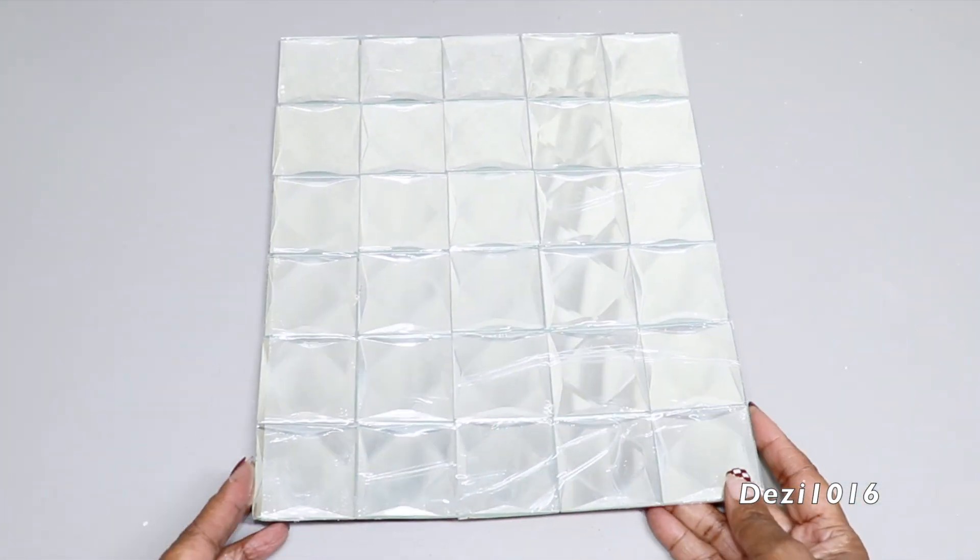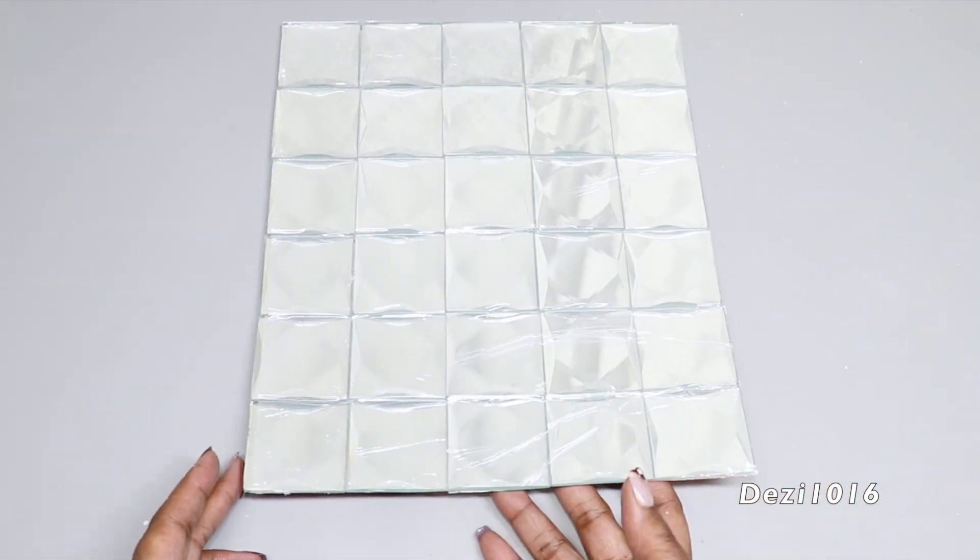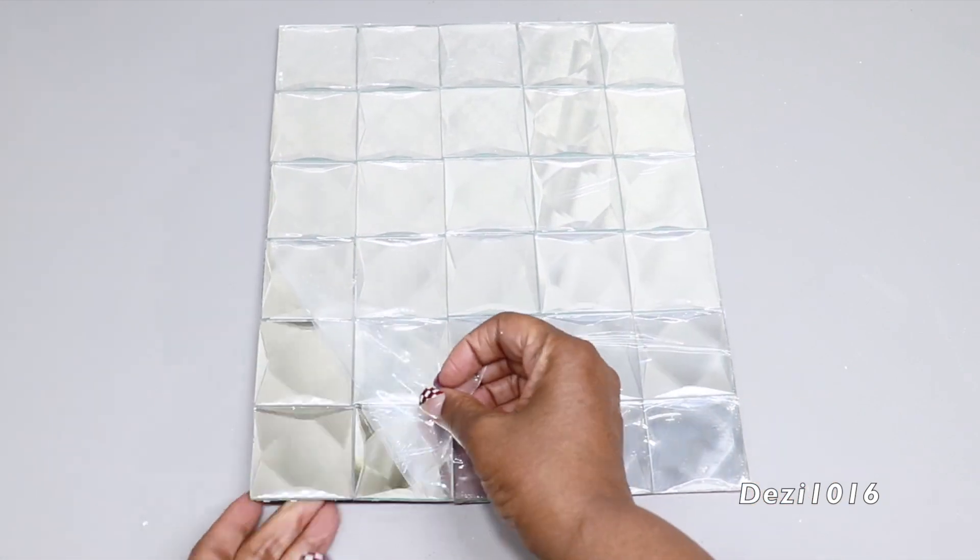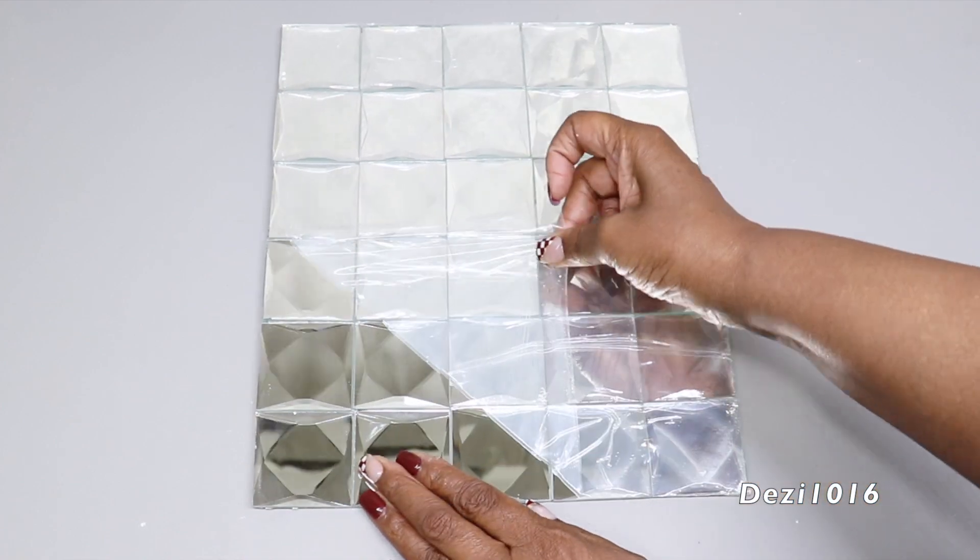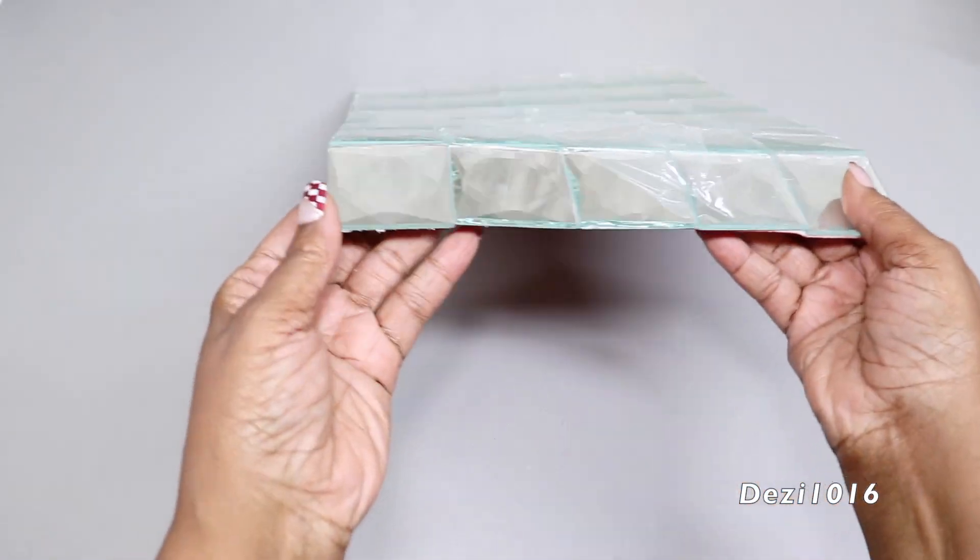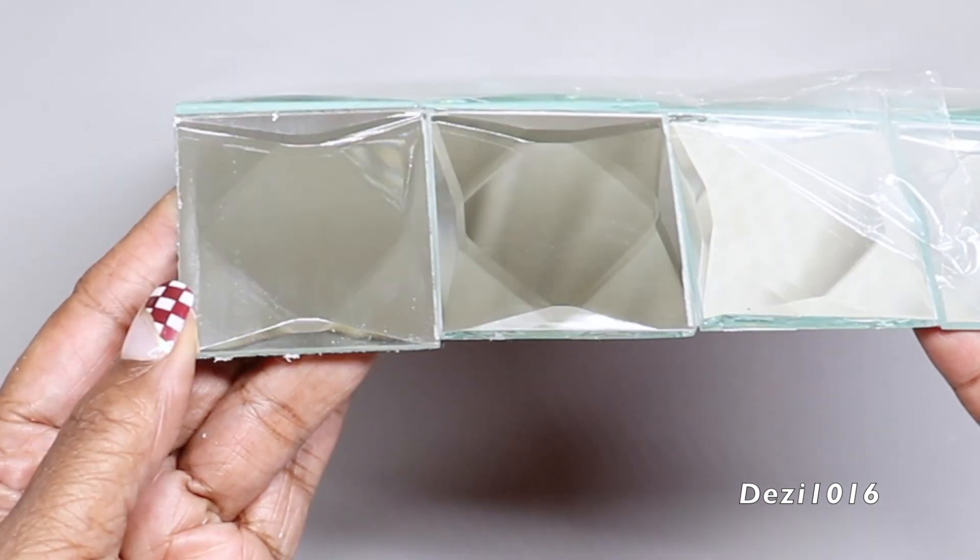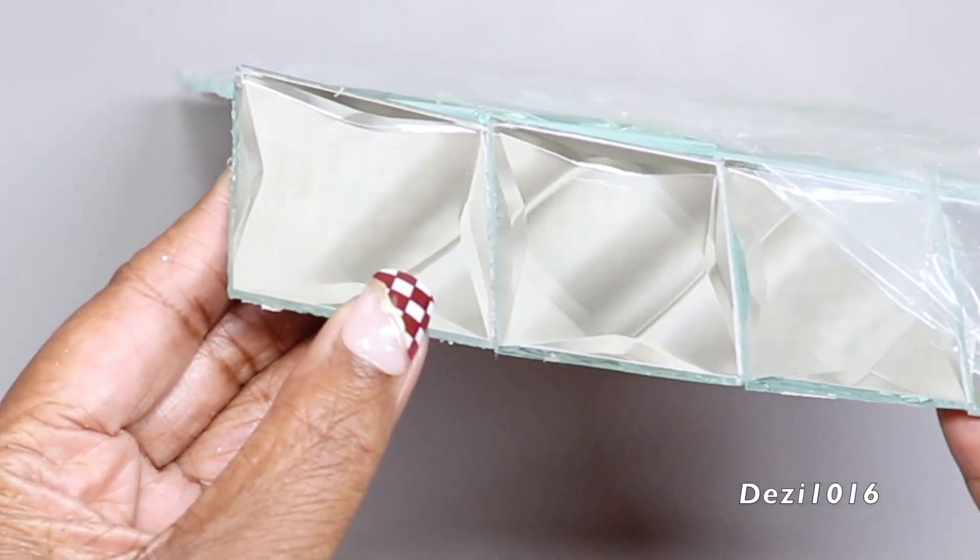So here are the tile mirrors I'm going to use. I picked these up from my home decorating store. I paid about $12 for this sheet, and I believe there are 30 tile mirrors on it. This is a wall backsplash used in kitchens and bathroom areas, so I'm going to use it for my project today.